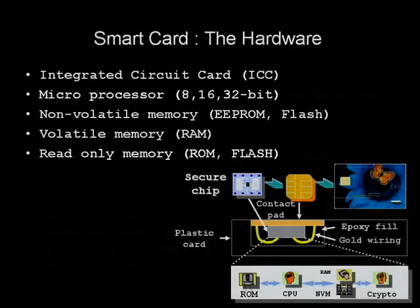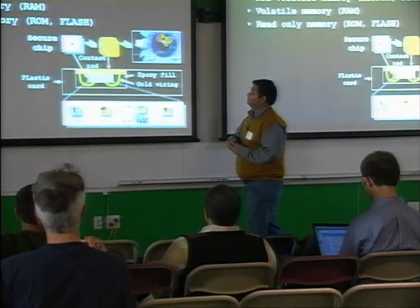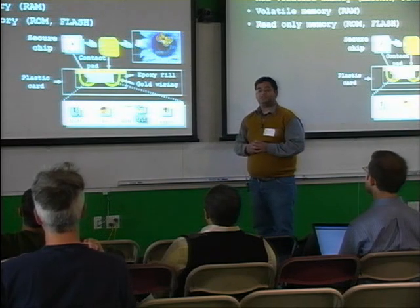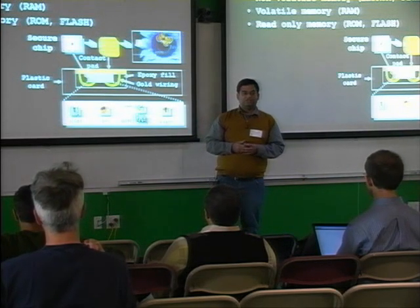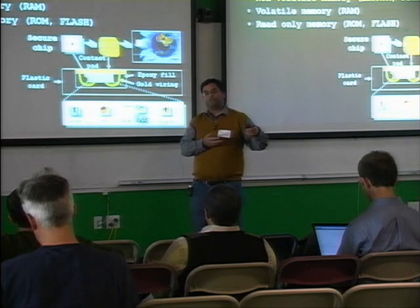Starting with the basics — the hardware device itself. The way I like to see smart cards is that they are computers. They have all the elements of computers, but they don't have the keyboard or mouse — the human interface device. But they do have CPUs, volatile memory (RAM), non-volatile memory where we put our applications and data, and read-only memory which contains the operating system. Smart card is also known as ICC — Integrated Circuit Card — with an I/O line on which you put the data.